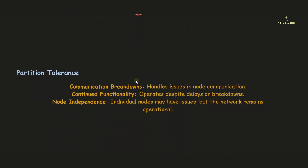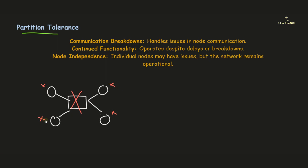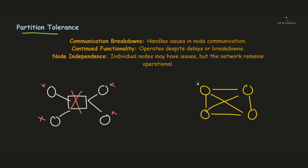Now let's move on to the last letter in CAP — 'P', which stands for Partition Tolerance. In a centralized system, every node is dependent on a central authority. If that central node gets corrupted, all other nodes stop functioning. But blockchain follows a distributed mechanism — if any node fails, it won't affect the other nodes; the other nodes will still function the same way as before.